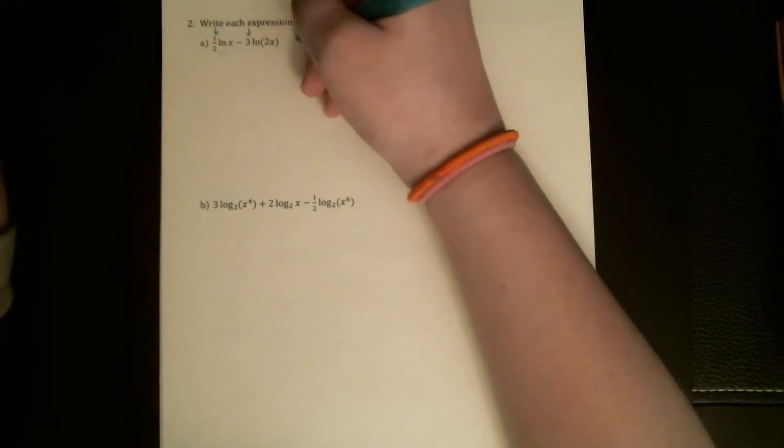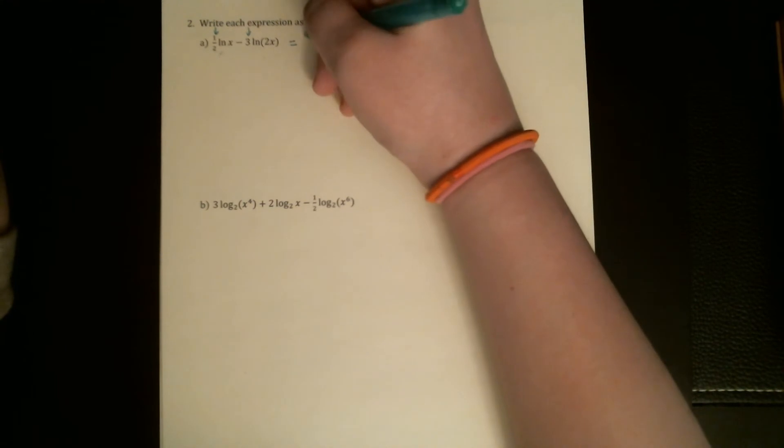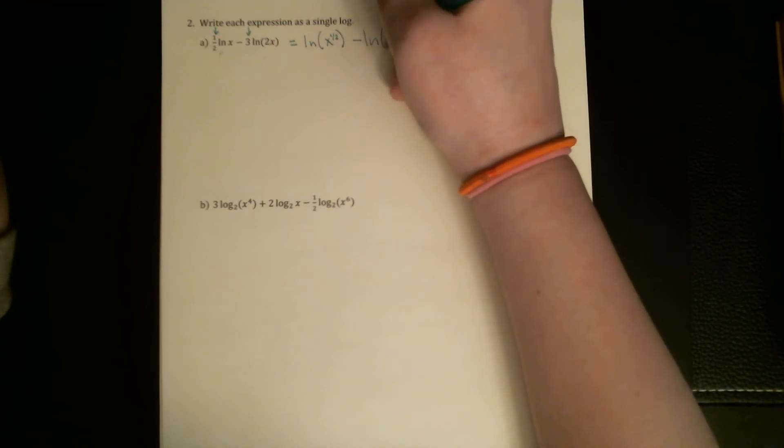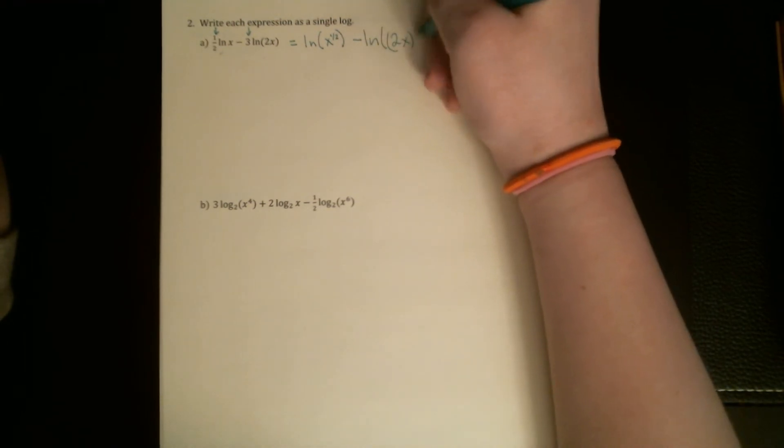The way to do that is to move them up into the power. So I get the natural log of x to the one-half minus the natural log of 2x cubed.